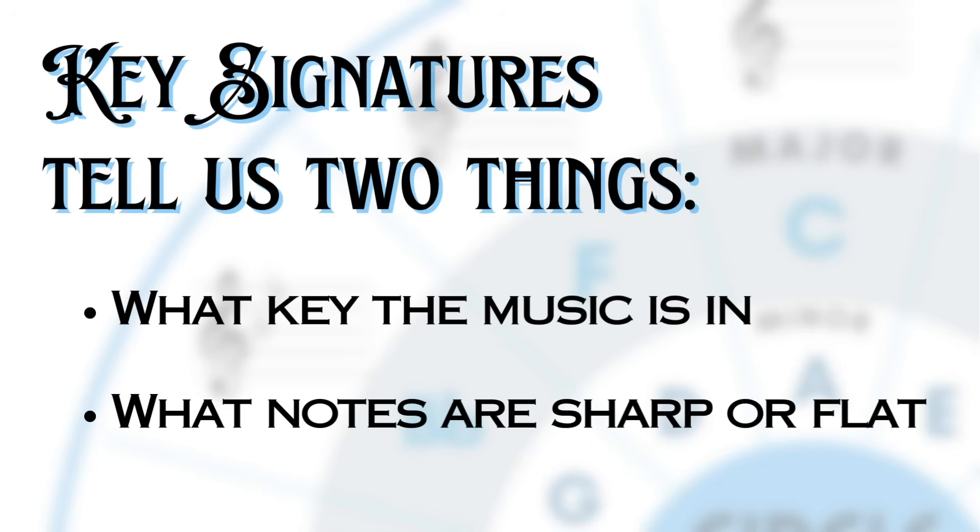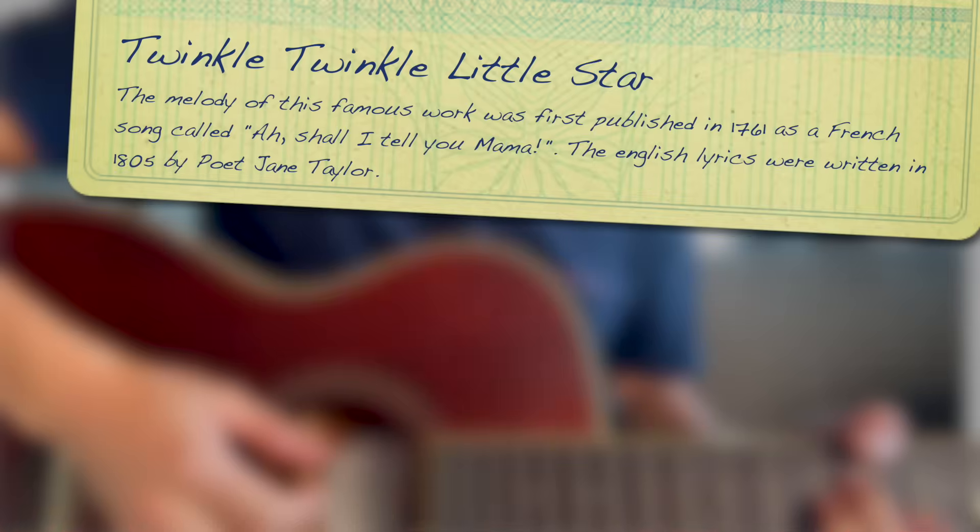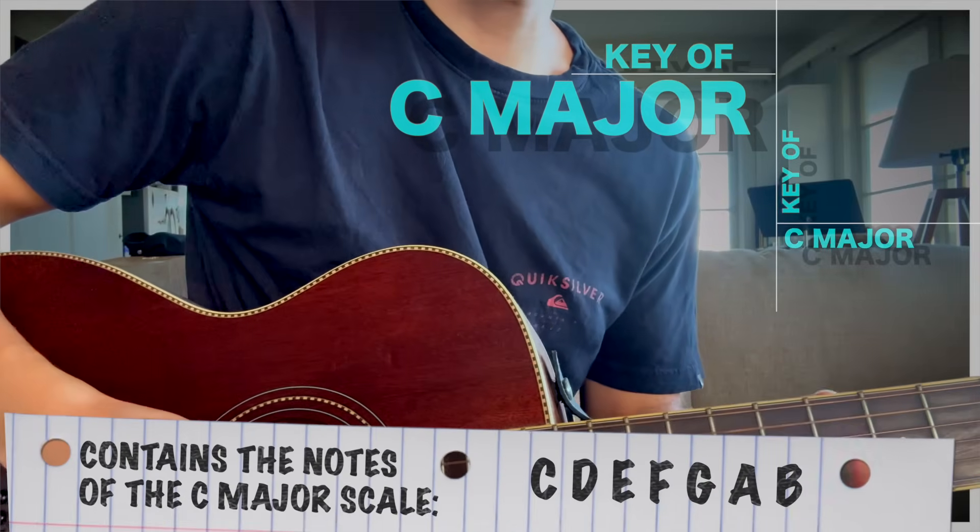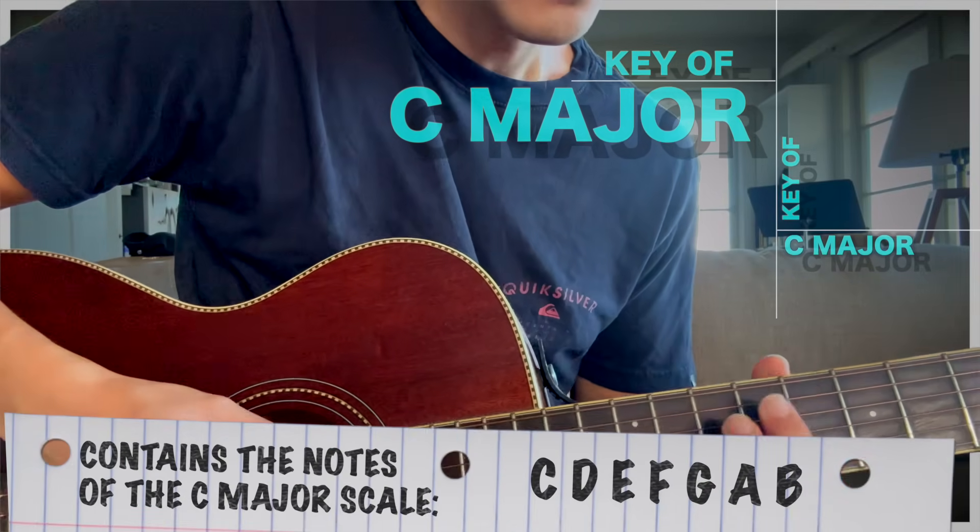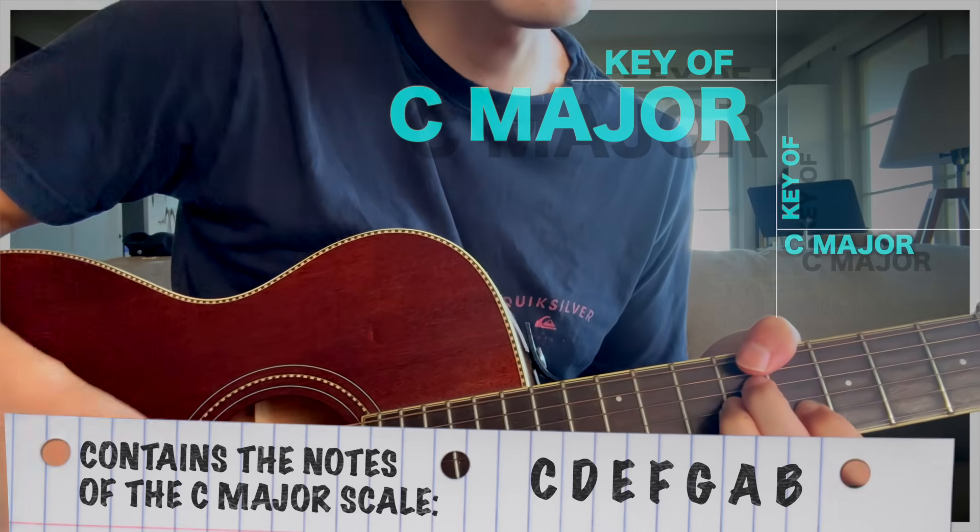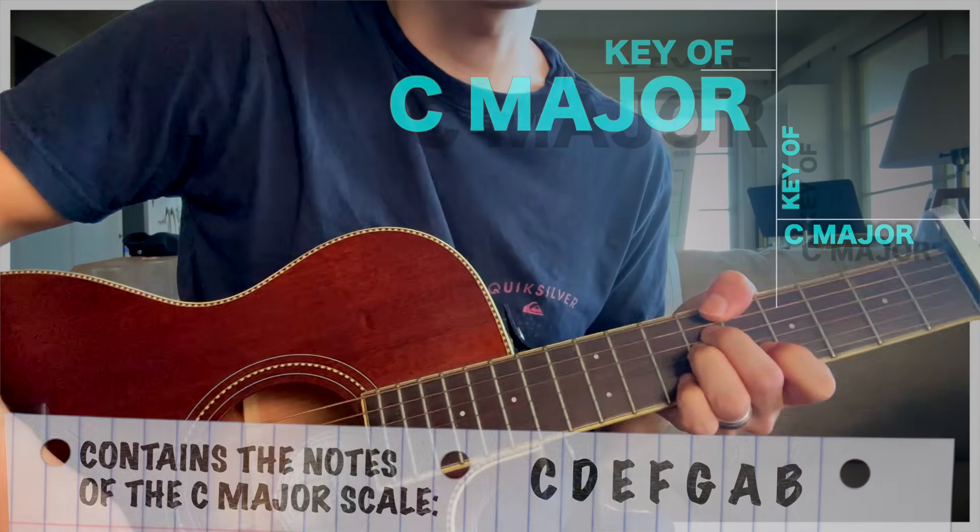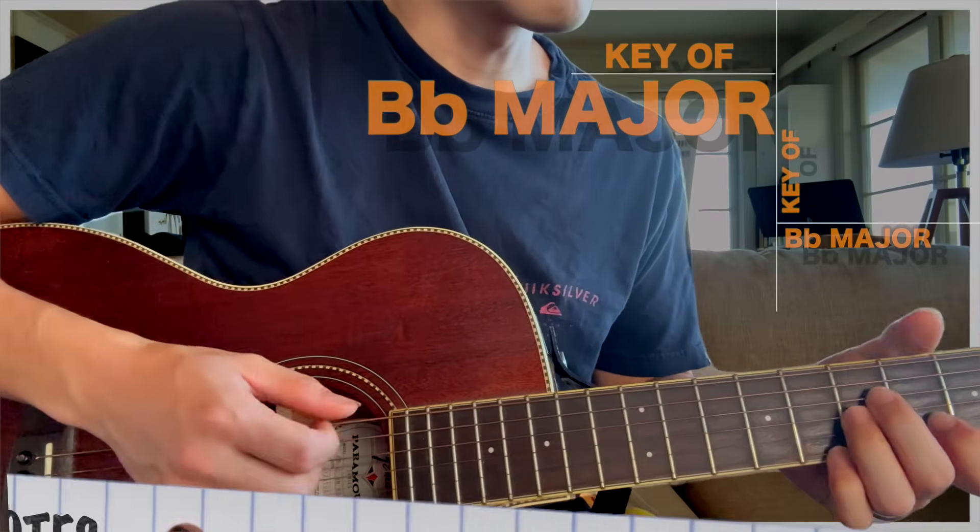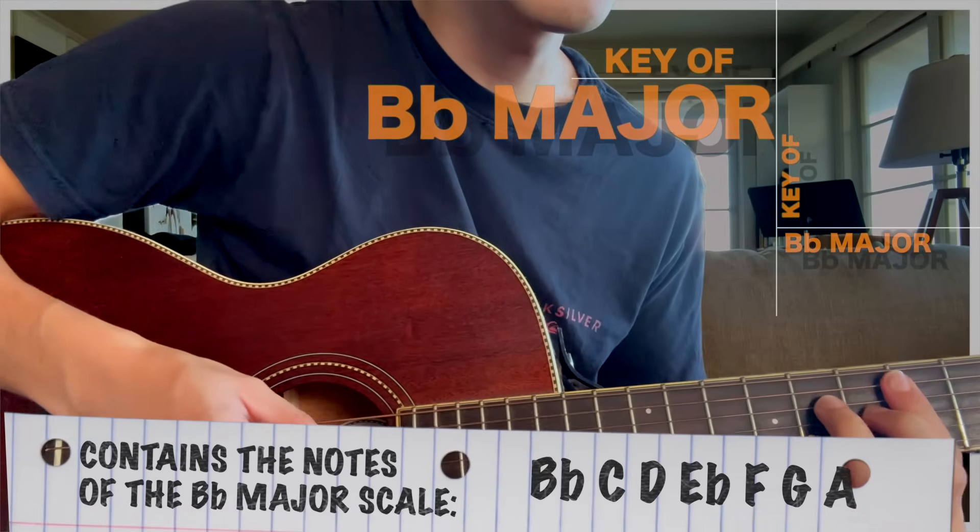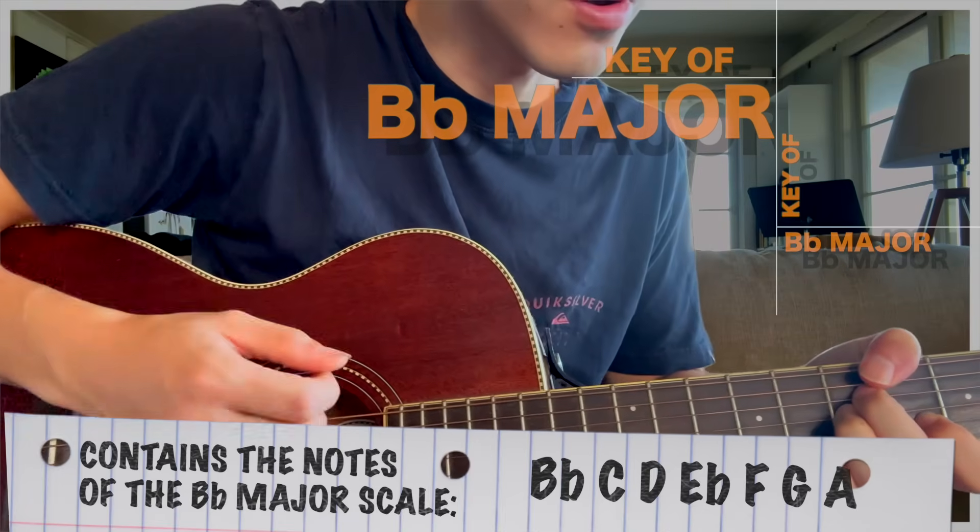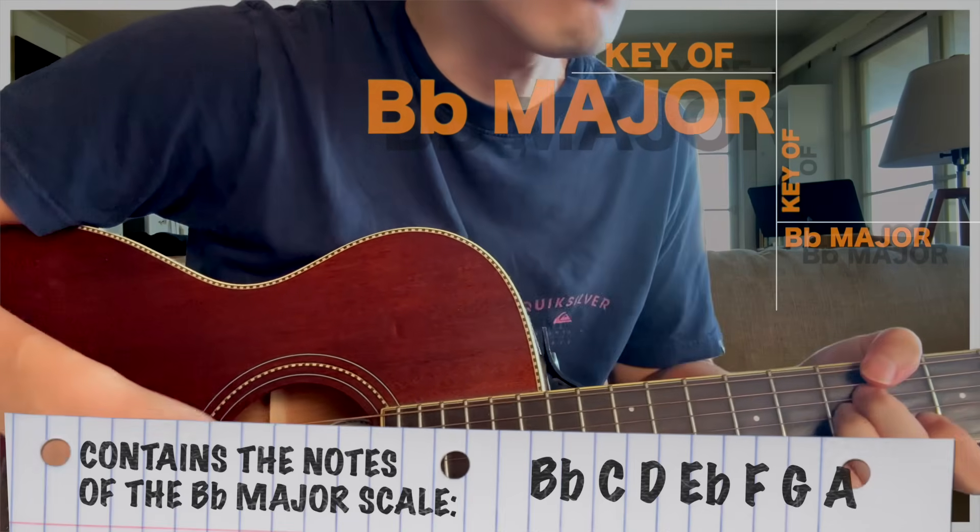Here's a song called Twinkle Twinkle Little Star performed in the key of C major and then in the key of B flat major. See if you can hear the difference. Twinkle twinkle little star, how I wonder what you are. Twinkle twinkle little star, how I wonder what you are.